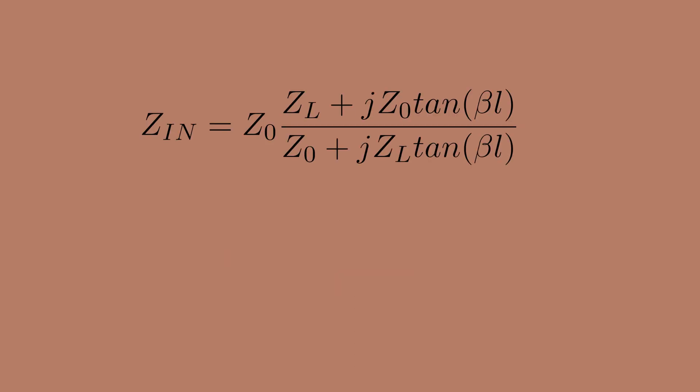The obvious place to turn to to answer this question is this equation right here, describing the input impedance of a transmission line as a function of load impedance, trace impedance denoted as Z0, and the length of the transmission line.